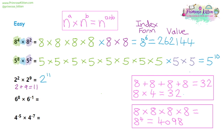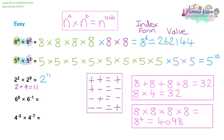The next example is ever so slightly trickier because it involves a negative number. We have six to the eight times six to the minus one. When we add a positive number and a negative number we get a negative result, and a negative times a negative gives a positive. So in this example we have eight plus minus one, which overall gives us seven. So the answer to this question is six to the power of seven.